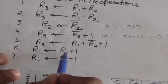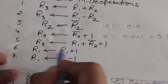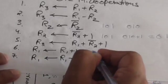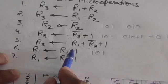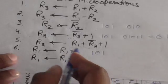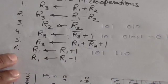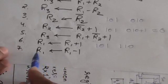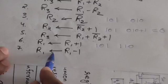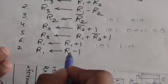In the increment micro operation, whatever is the content of register R1, it is incremented by one. For example, if before applying this micro operation the content of register R1 is 101, then after the increment micro operation the content of register R1 will become 110.